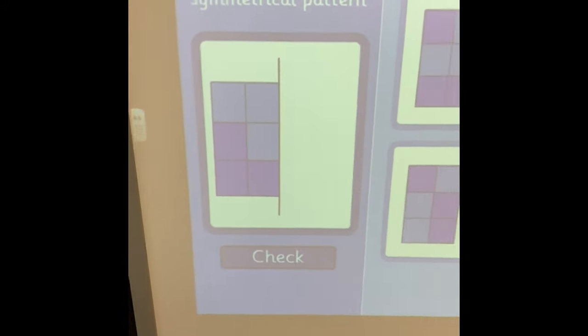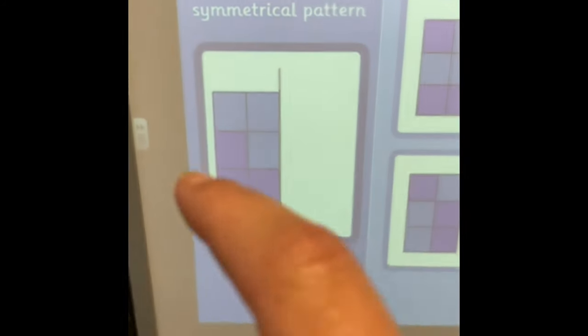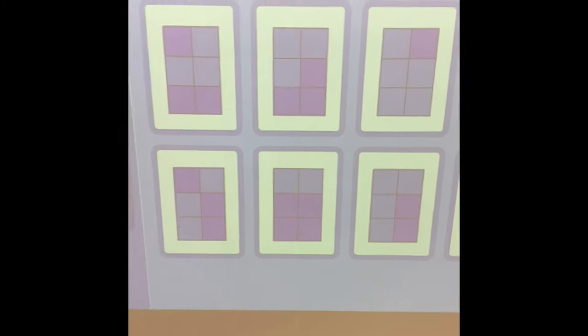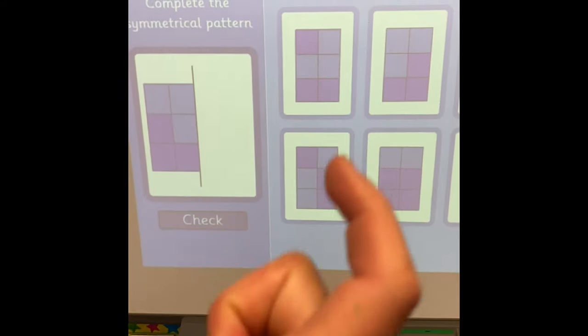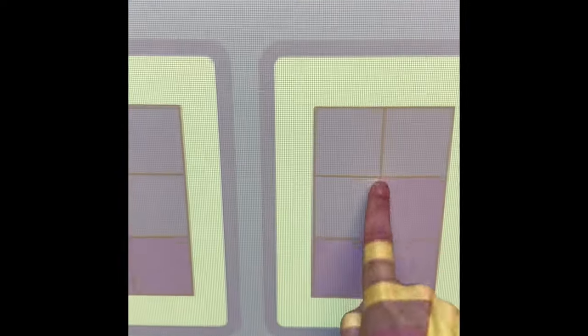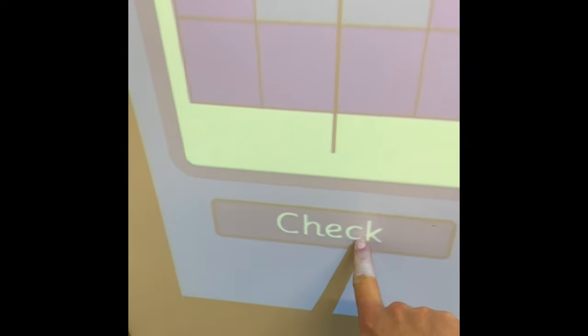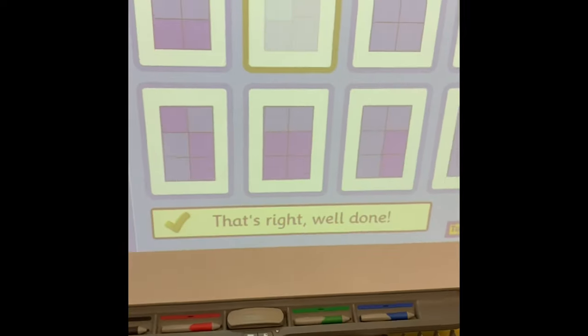It'll say complete the symmetrical pattern. So I'm going to have a look at this and I can see that there's a light blue and a dark blue and there's three. One, two, three light blues, one, two, three dark blues. Let's have a look and see if I can find the one that is symmetrical. And I think it's this one. I got it right. Let's check. That's right. Well done.